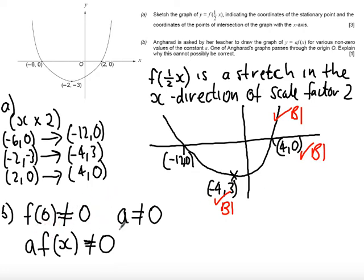Part B, perhaps I should have written a sentence here, but the explanation is important. As long as you can identify and explain that f(0) is not equal to 0, and a can't be equal to 0, so therefore af(x) can't be equal to 0, you've got your explanation mark. Perhaps I should have written that out in a full sentence to be clearer. I hope you understood the answer and how to mark it.